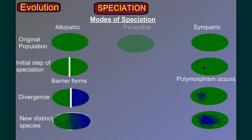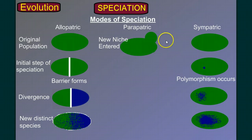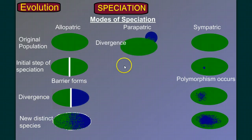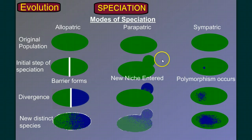There's one more mode called parapatric — para meaning 'alongside of.' In this case, the first step is a new niche being entered: some new space opens up to the population, and individuals can move into that space and take advantage of the resources there. Because they're in that area, a divergence occurs — the organisms over here slowly start to change genetically from the others. If enough time passes, that group alongside the original group forms a new species.